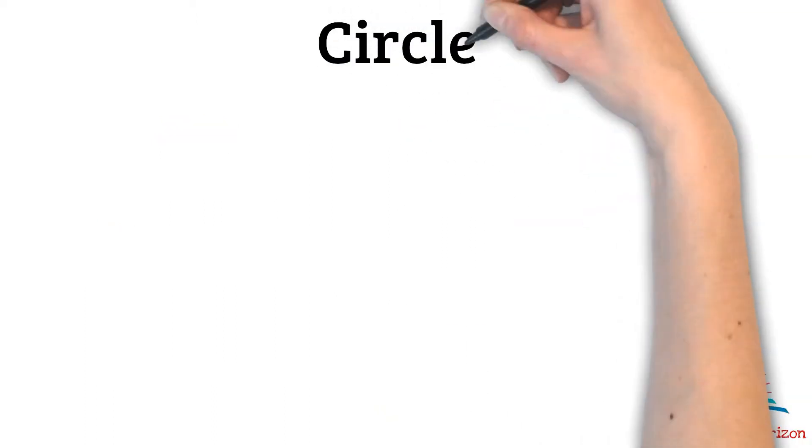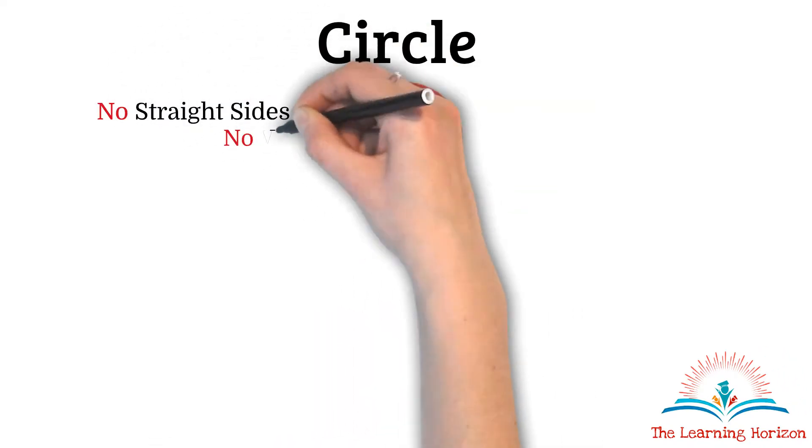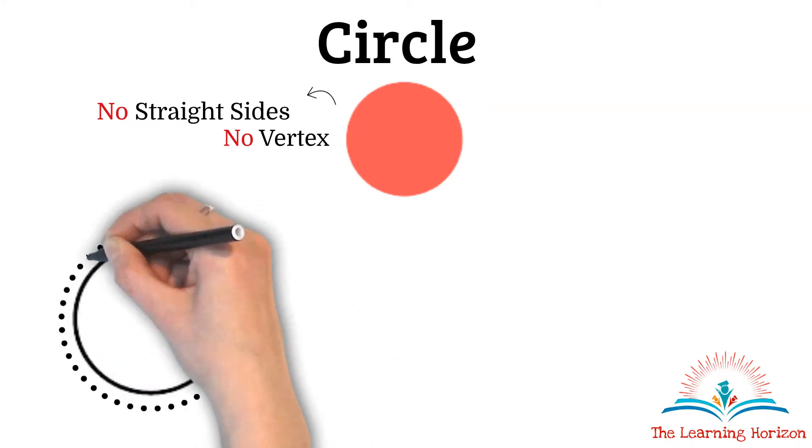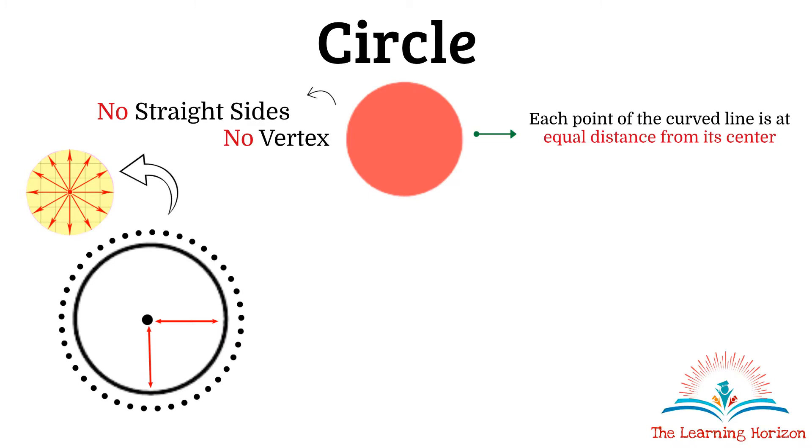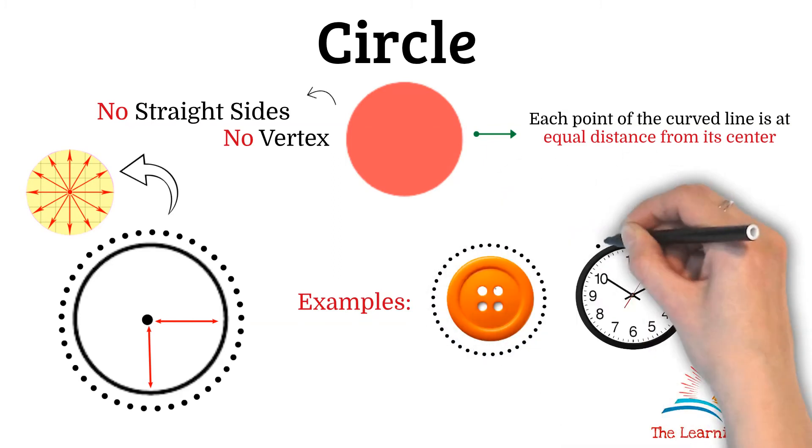Let us first begin with a circle. Circle is a closed shape with no straight sides, therefore no vertex. It is made up of a curved line. Circles are perfectly round. What does that mean? It means that each point on this curved line is at equal distance from its center. For example, this distance is exactly same as this. No matter from which point on the curve you measure, it is at equal distance from this center. Some real world examples for a circle are a button or a round clock. Both of these are perfectly round and therefore they are circles.